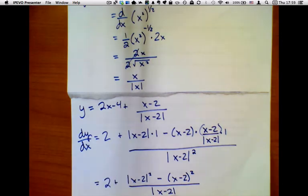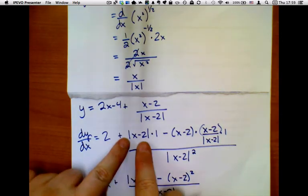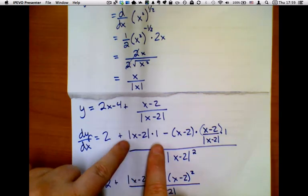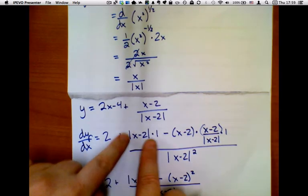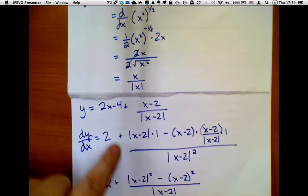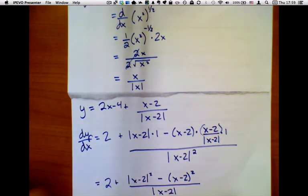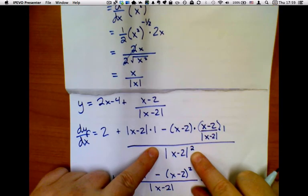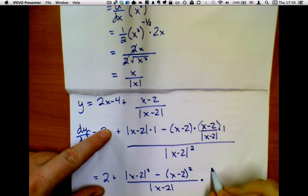And again, the reason I can say that is because I multiplied this by x minus 2 over x minus 2. So I have this over absolute value, right? I have this over x minus 2. Times, and instead of having this big double-decker fraction, I'm going to multiply by 1 over the absolute value of x minus 2 squared.